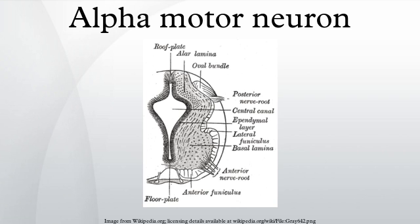Upper motor neurons send input to alpha motor neurons via several pathways, including the corticonuclear, corticospinal, and rubrospinal tracts. The corticonuclear and corticospinal tracts are commonly encountered in studies of upper and lower motor neuron connectivity in the control of voluntary movements. The corticonuclear tract connects the cerebral cortex to cranial nerve nuclei, allowing upper motor neurons to descend and synapse on alpha motor neurons of the brainstem. Similarly, upper motor neurons of the cerebral cortex are in direct control of alpha motor neurons of the spinal cord via the lateral and ventral corticospinal tracts.